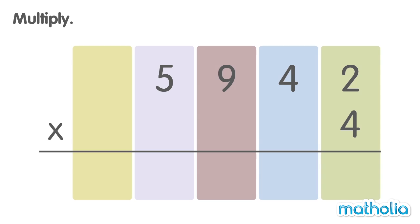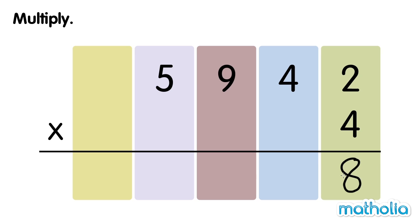Let's multiply 5,942 by 4. Start by multiplying the 1s. 4 times 2 ones equals 8 ones. Next,